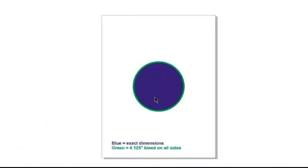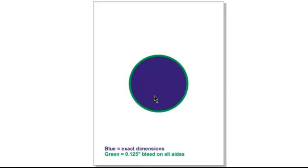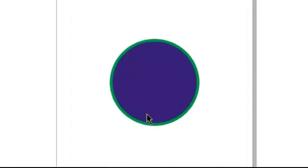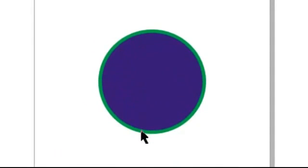Note that the blue area of the template defines the exact size of the substrate, whereas the green area defines the bleed area. You will need to make sure that the edges of your artwork match the outer edges of the green area. This will be covered a little bit later in the video.